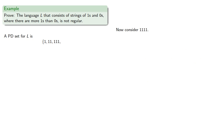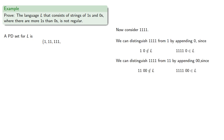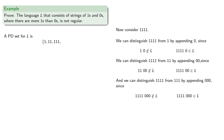Now consider the string of four 1s. As before, we can distinguish it from 1 by appending 0, we can distinguish it from 11 by appending 00, and we can distinguish it from 111 by appending three 0s. And so 1111 is also in our pairwise distinguishable set.